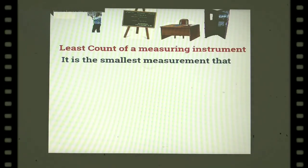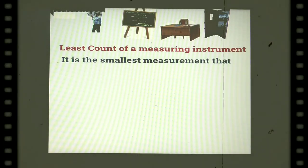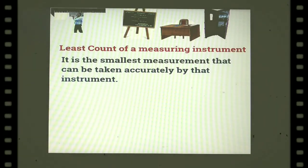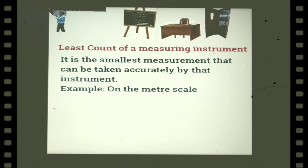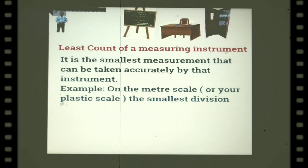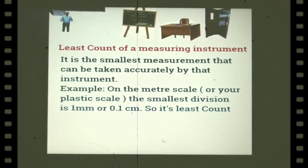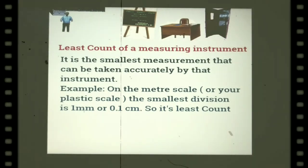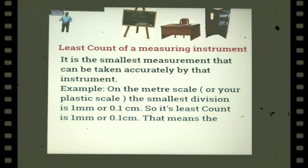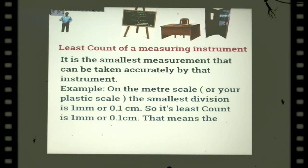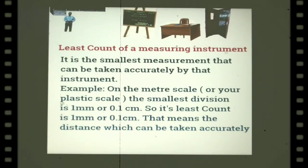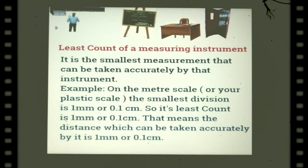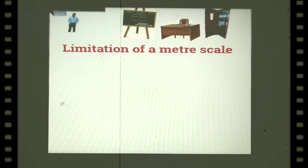The least count is the smallest measurement that can be taken accurately by an instrument. For example, on the meter scale or your plastic scale, the smallest division is one millimeter or 0.1 centimeter. So its least count is one millimeter or 0.1 centimeter — meaning the smallest distance that can be measured accurately is one millimeter.